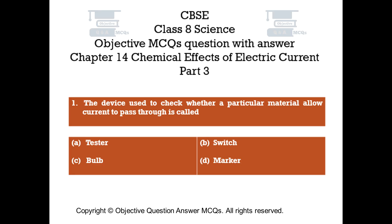Question number 1. The device used to check whether a particular material allows current to pass through is called. Option A: Tester. Option B: Switch. Option C: Bulb. Option D: Marker.